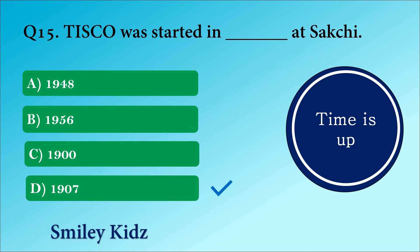The right answer is option D. 1907. Tata Iron and Steel Company Limited was started in 1907 at Sakchi.